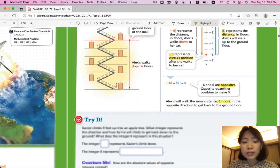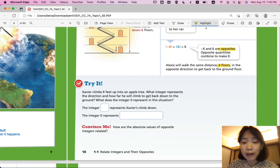So let's look at the try it question. If Xavier climbs nine feet up into an apple tree, what integer represents the direction, and how far he will climb to get back down to the ground? What integer? And what does the integer zero represent in this situation? See if you can fill in the blanks by yourself. Come back when you're ready for the answer.